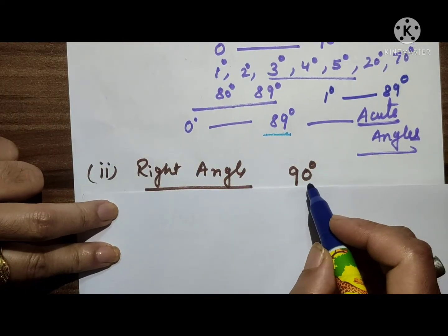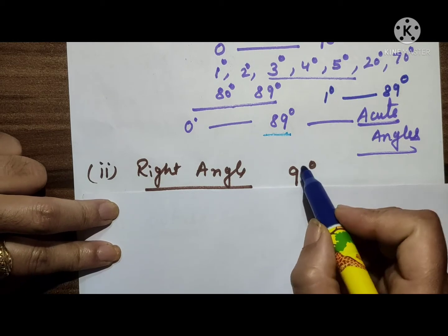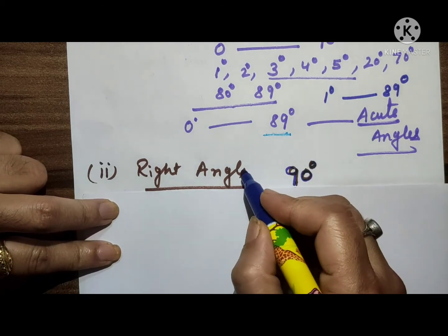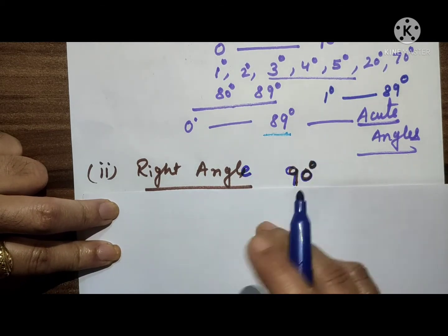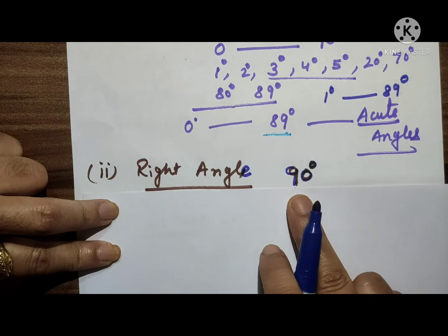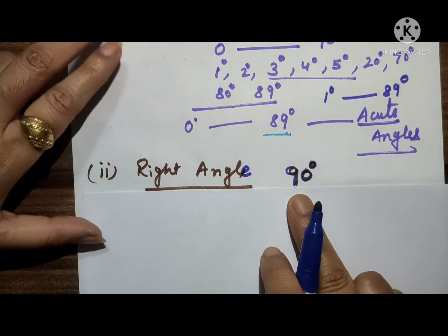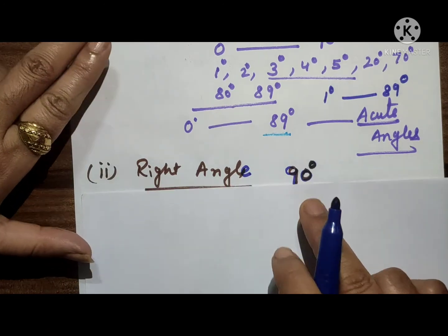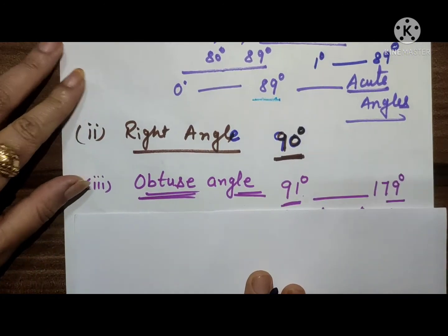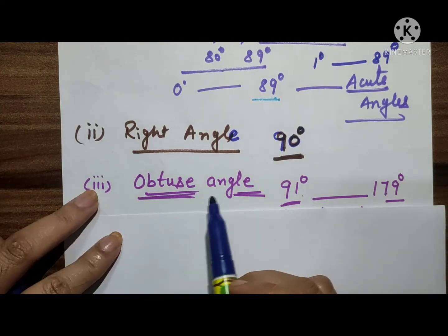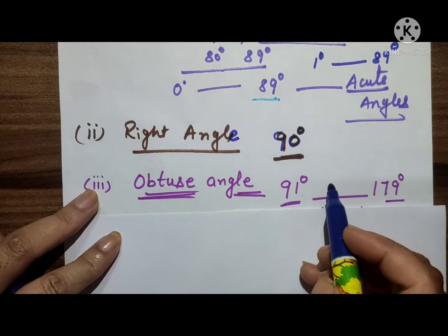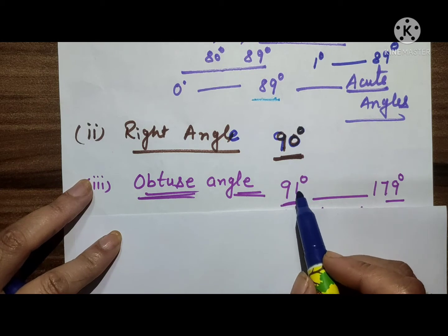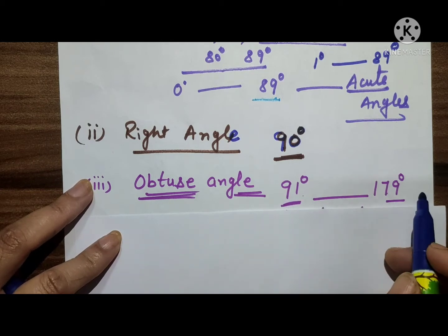Next is the right angle. An angle whose measure is exactly 90 degrees is called a right angle.